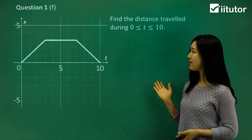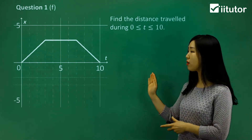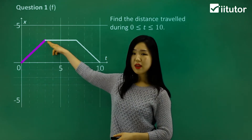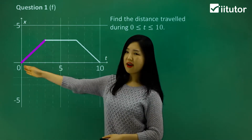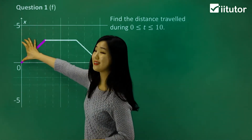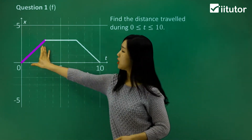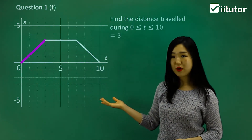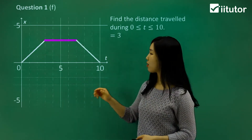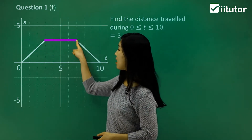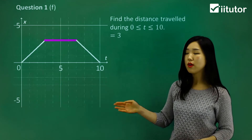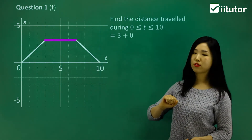Part f is asking us to find the distance travelled between time 0 and 10 — so the total distance. From 0 to 3, we always look at the vertical distance. We've travelled up to 3, so the distance is 3. Remember, don't get confused — the length of the line is not what we're finding; it's the vertical distance. Now when t is between 3 and 7, the graph is flat, which means we haven't moved at all, so the distance is 0 for that segment.